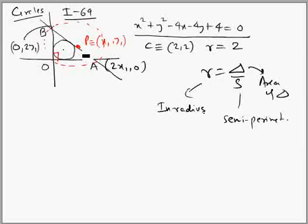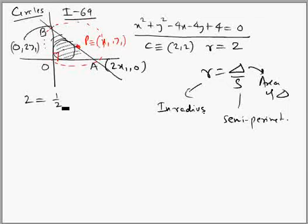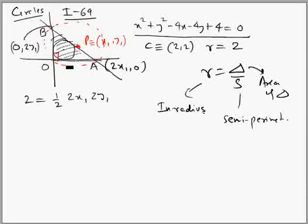Using the midpoint formula: midpoint is (x1, y1), x-intercept is 2x1, and y-intercept is 2y1. We apply the in-radius property. The radius of the incircle is 2. The area of the circumscribing triangle is half base times height: (1/2) × 2x1 × 2y1. There is no need for a mod sign because this triangle is in the first quadrant, so x1 and y1 are both positive.